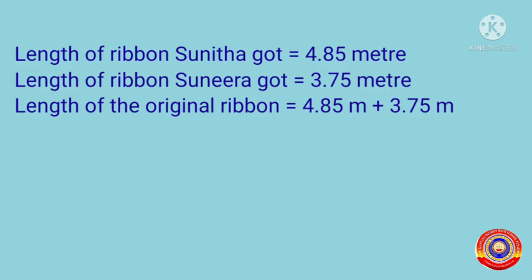Write 4.85 plus 3.75, placing the decimal parts aligned. Now add these numbers from right towards the left: 5 plus 5 is equal to 10 — write zero here and carry over 1. Then 1 plus 8 is equal to 9, and 9 plus 7 is equal to 16 — write 6 here and carry over 1.